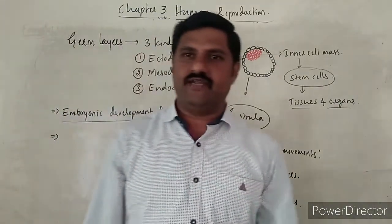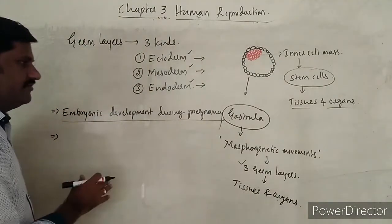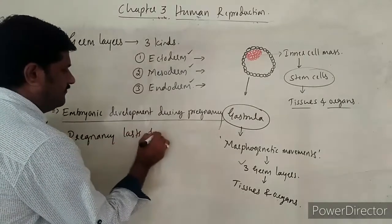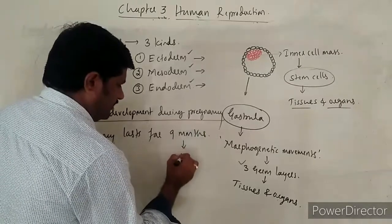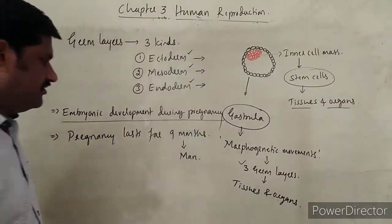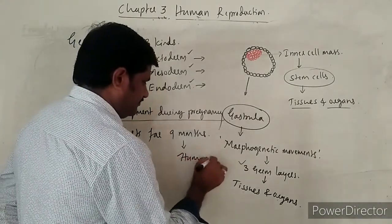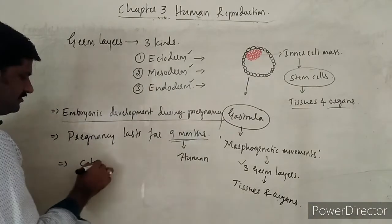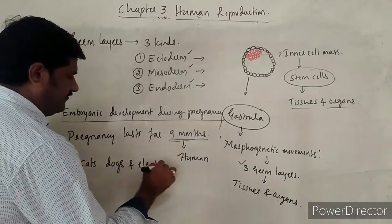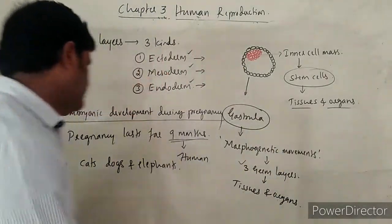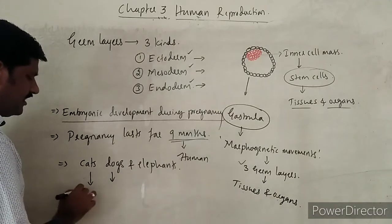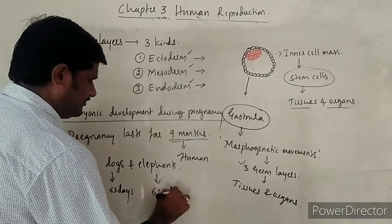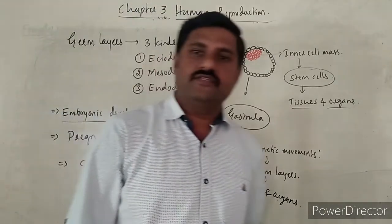What happens in the first month, second month — let us go through it. Pregnancy lasts for nine months in case of human beings. For other mammals we must also know: cats and dogs, their pregnancy lasts about 63 days respectively, and an elephant's pregnancy lasts 624 days. This is a basic fundamental fact to remember.